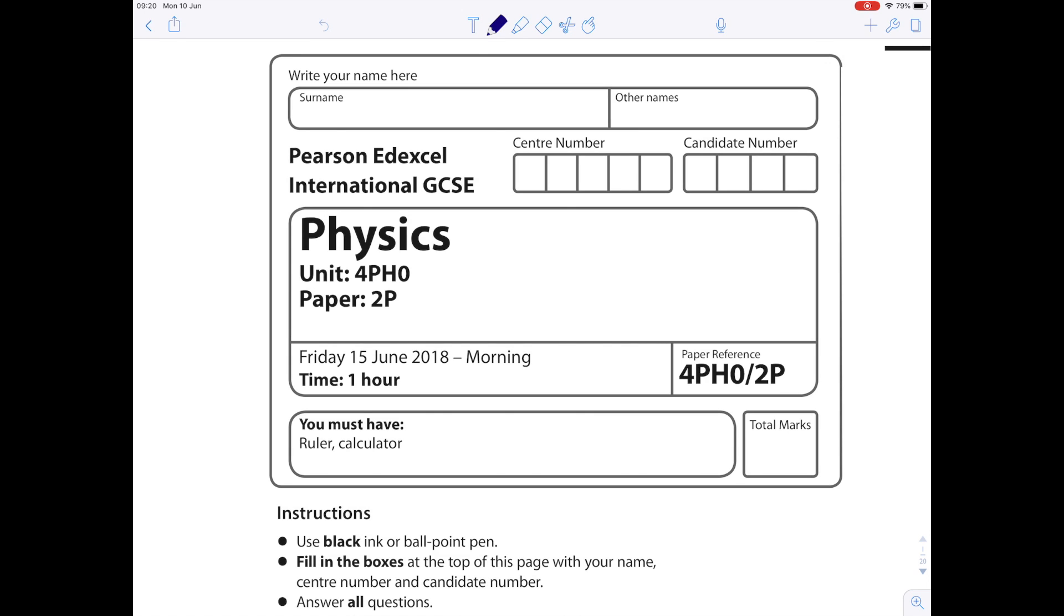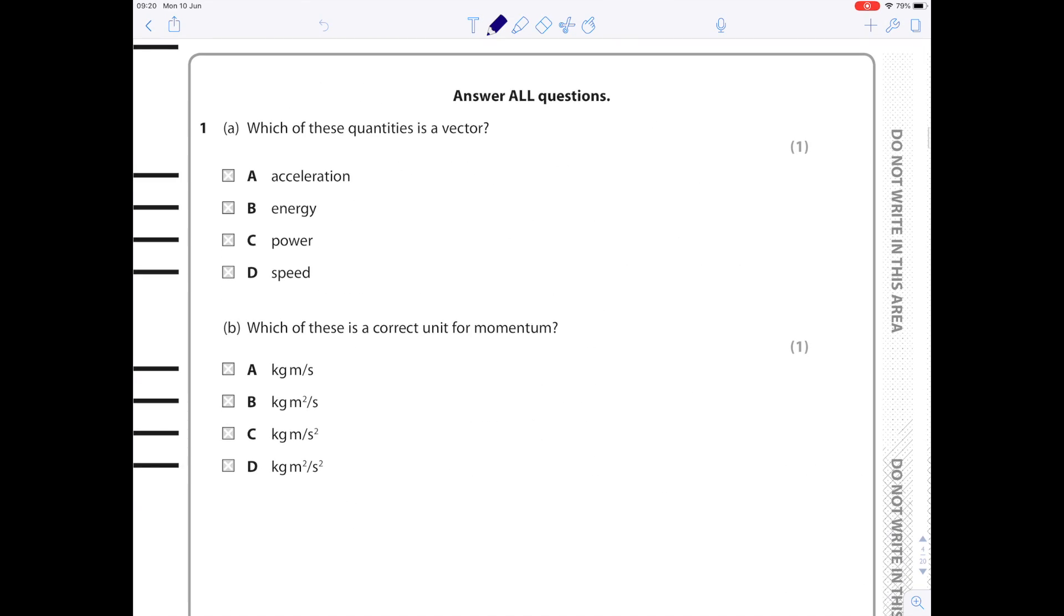I'm now going to answer a 2P paper, and this is the June 2018 paper, starting with question one. Which of these quantities is a vector? This is just a list you're going to have to learn off by heart. Personally, I would learn all six vector quantities and then assume everything else is scalar. Our vector quantities are displacement, acceleration, velocity, momentum, force, and weight. Do any of these feature in our list? Yes, they do. A: acceleration.